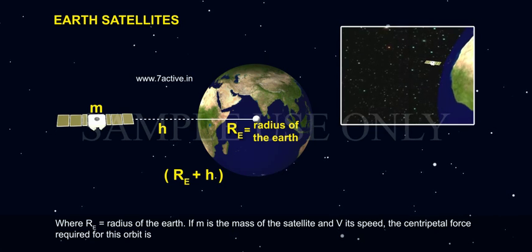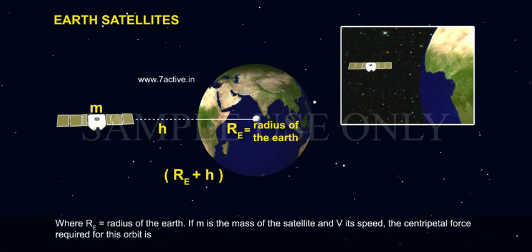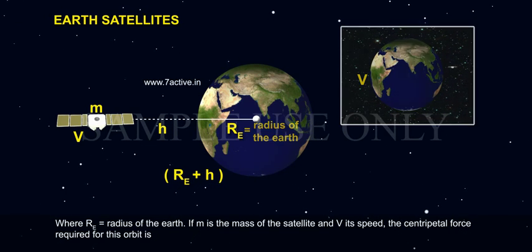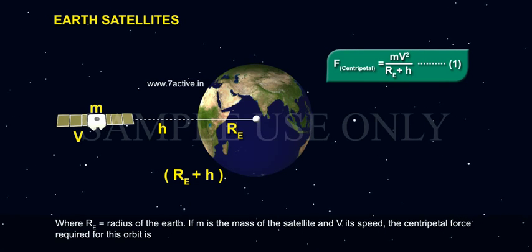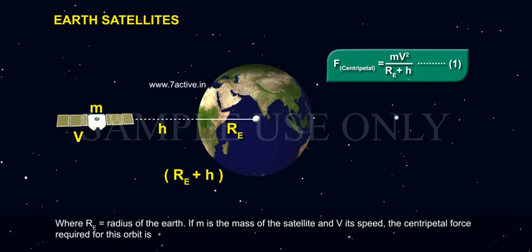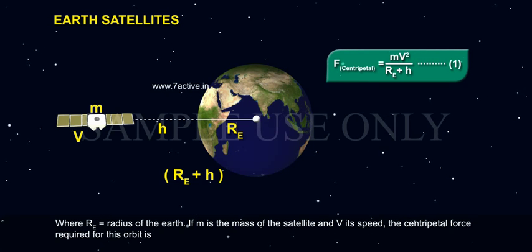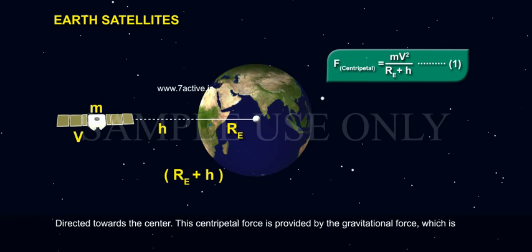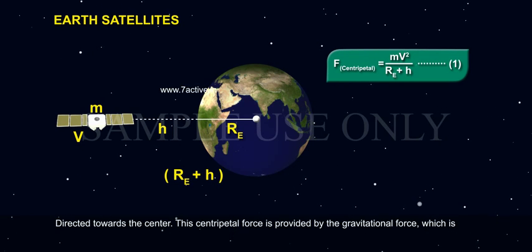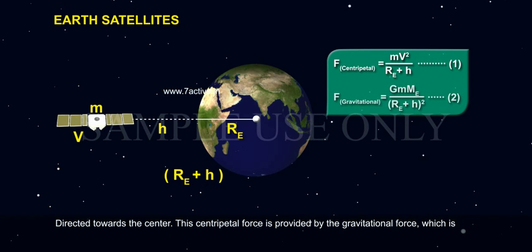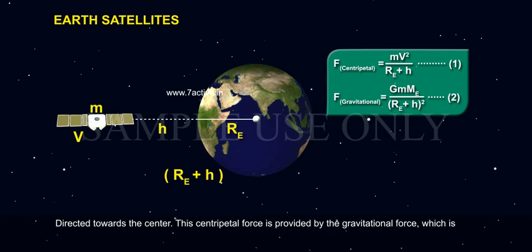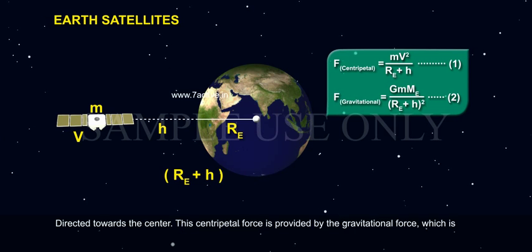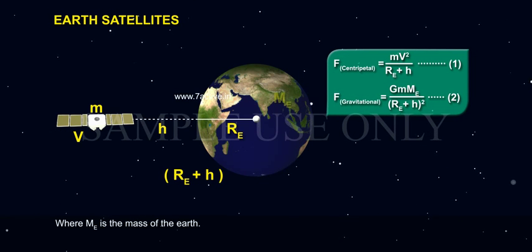If M is the mass of the satellite and V its speed, the centripetal force required for this orbit is F_centripetal equals MV² divided by (RE + H), Equation 1. Directed towards the center, this centripetal force is provided by the gravitational force, which is F_gravitation equals GmME divided by (RE + H)², Equation 2, where ME is the mass of the Earth.